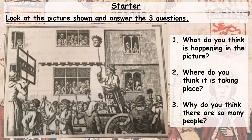Hello Year 7, and we're back now for our third lesson on King Edward and Llewellyn. As a starter to this lesson, I'd like you to look at the picture shown and answer these three questions: What do you think is happening in this picture? Where do you think this picture is taking place? And why do you think there are so many people?